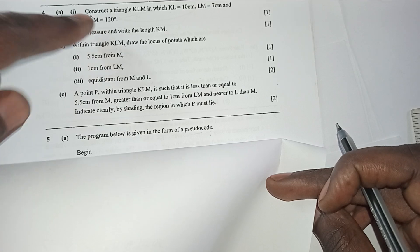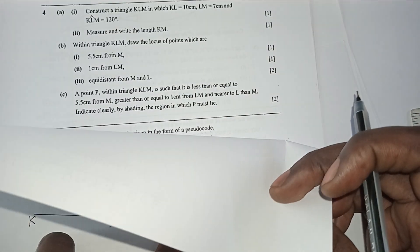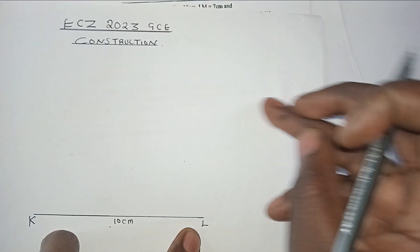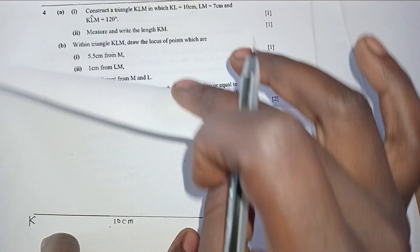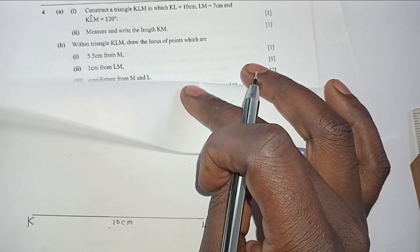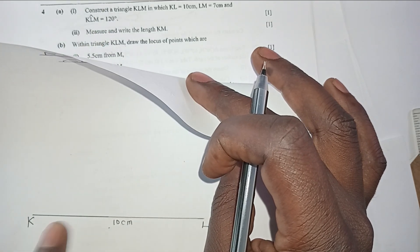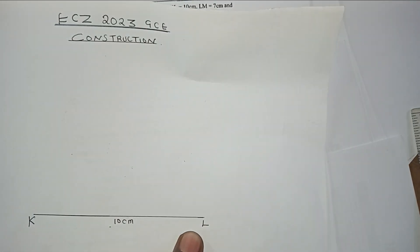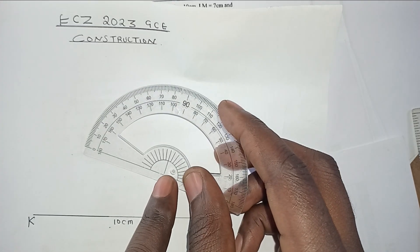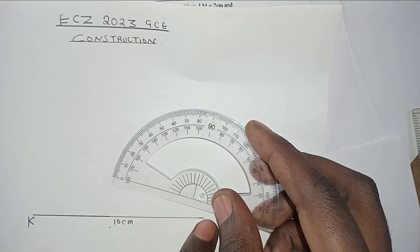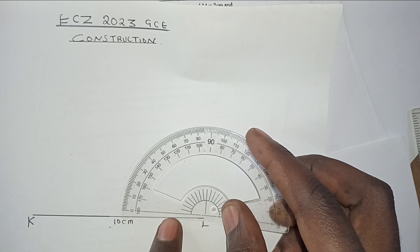We start with the angle because our distance KL is here but we don't know exactly where LM is. So first we construct the angle at 120 degrees — going from K to L, then M in that direction. Get your protractor and place its center at L where the angle turns from, making sure the base line aligns with KL.